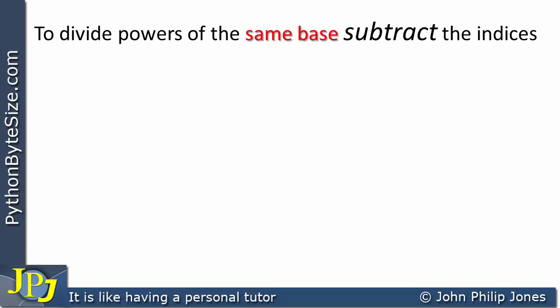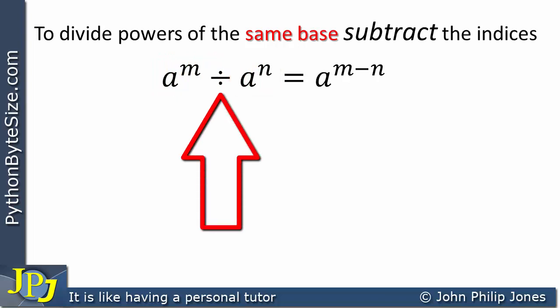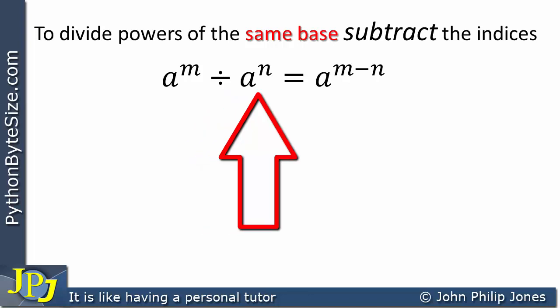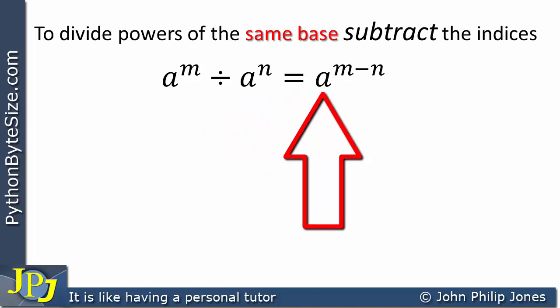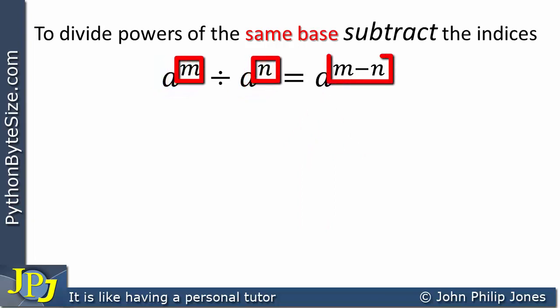To divide powers of the same base, you can subtract the indices. Consider the following: here you can see I am dividing a to the power m by a to the power n. When you see a division like this, you can write the base down, because we have the same base for the numbers. And if you look to the indices, you can see they are subtracting. So I am taking the n away from the m.